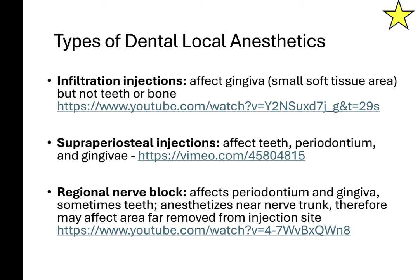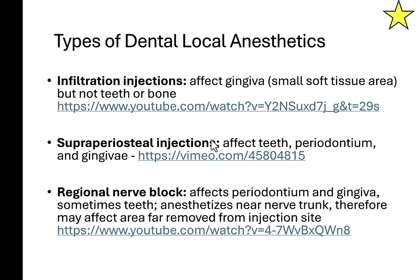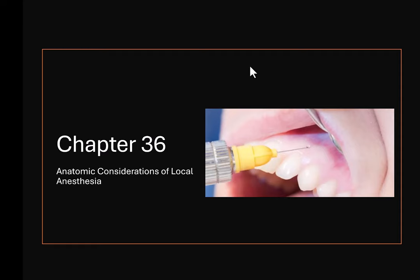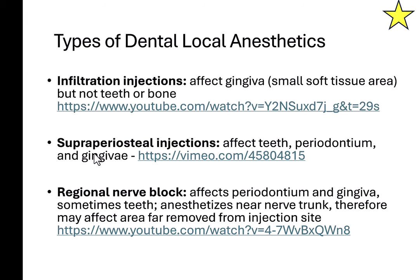Before we look at the different types of injections, let's look at the types of dental local anesthetic: infiltration, supraperiosteal, and nerve blocks. There are video links in the description below showing how each is done. With an infiltration injection, you're just injecting into the gum, and the gum is numbed — not the tooth, not the bone.